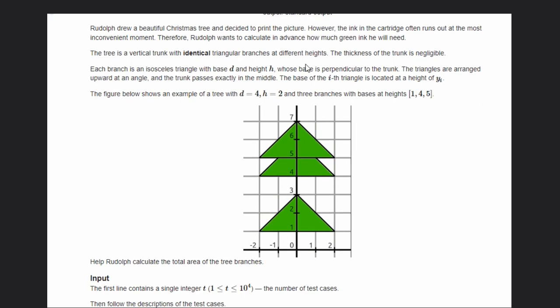We are given identical triangular branches at different heights, and we want to calculate the ink required to make this Christmas tree. If there are three branches—this branch, this branch, and this branch—we are given the base and the height.